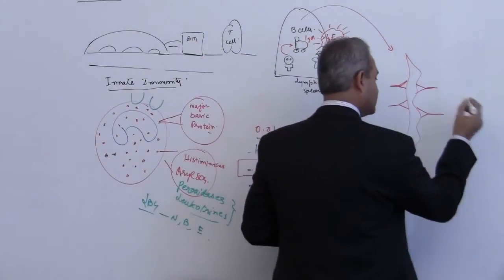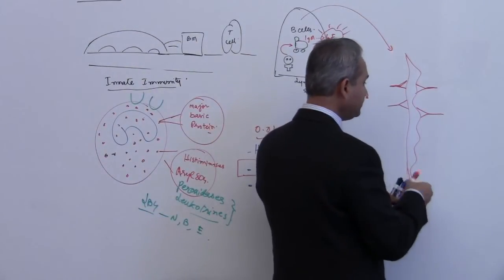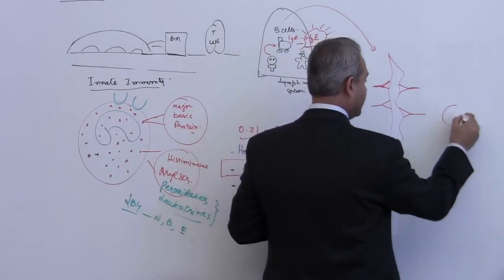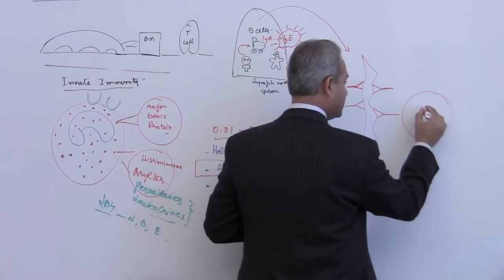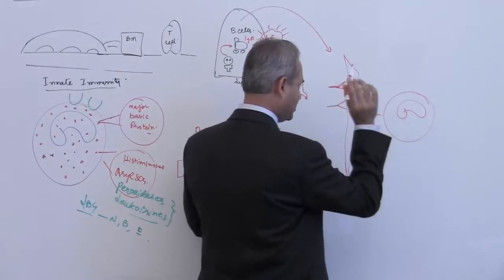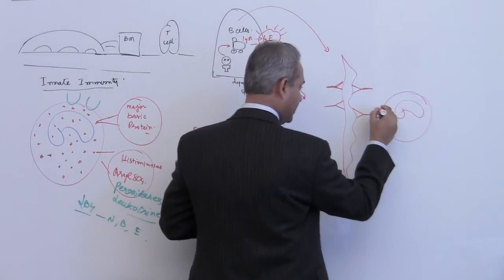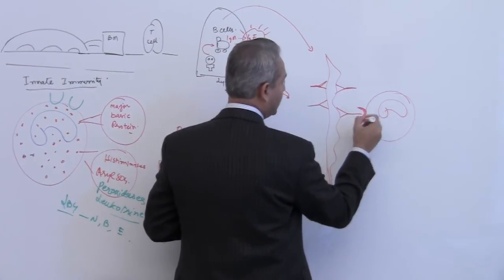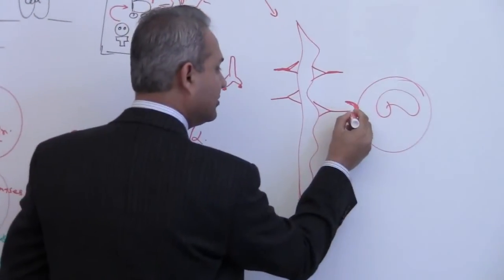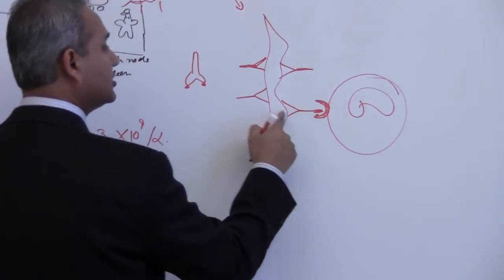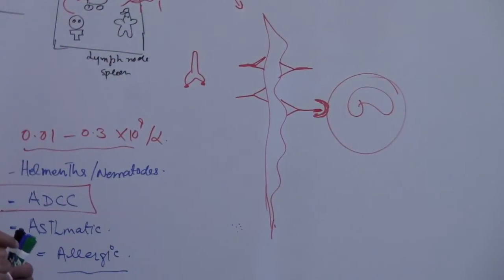So the mast cell, sorry, the eosinophil is going to appear here. Eosinophil is going to appear here. I am making the nucleus red, that is okay, it should be blue. So here is the receptor for IgE, Fc portion of the IgE, the tail part of the IgE, and now the eosinophil is connected to the IgE.